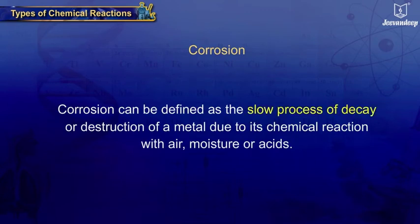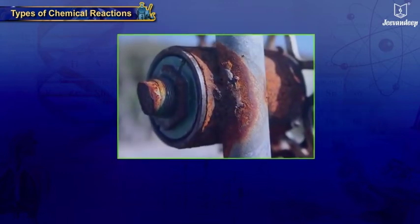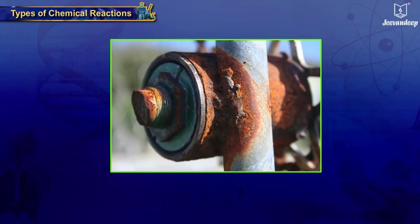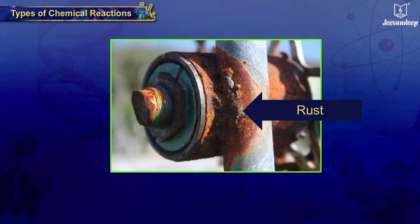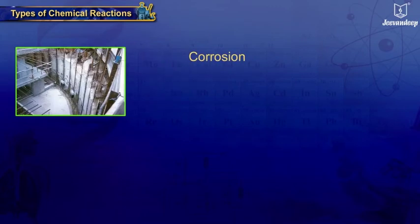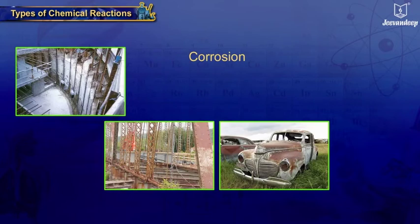Corrosion: Corrosion can be defined as the slow process of decay or destruction of a metal due to its chemical reaction with air, moisture, or acids. A reddish-brown colored layer of iron oxide formed on the surface of iron objects is known as rust, which is the effect of corrosion. Its molecular formula is Fe₂O₃·H₂O.